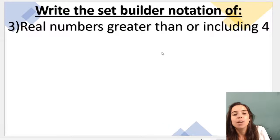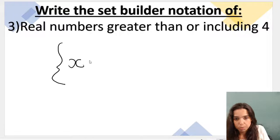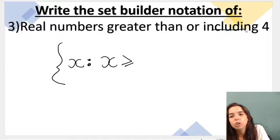Real numbers greater than or including 4. So curly brackets like that. Then we go x, our variable. Colon, we go x is greater than or equal to. Do you see it says or including 4. That's it.